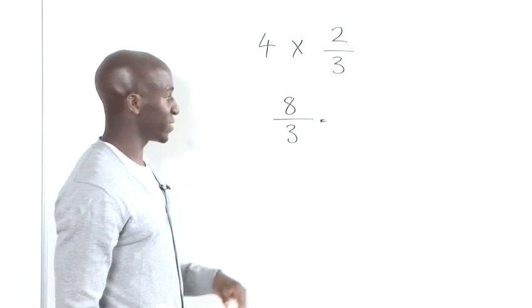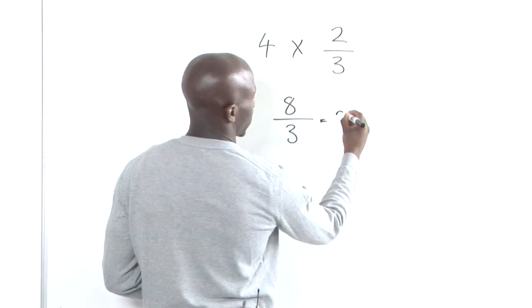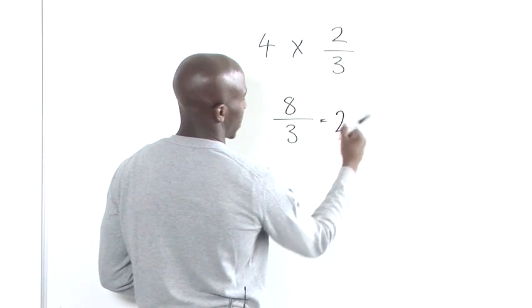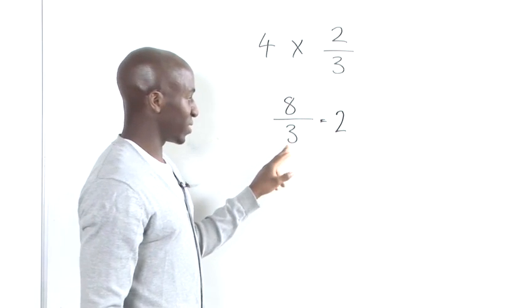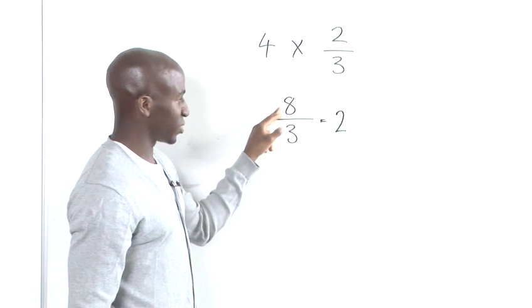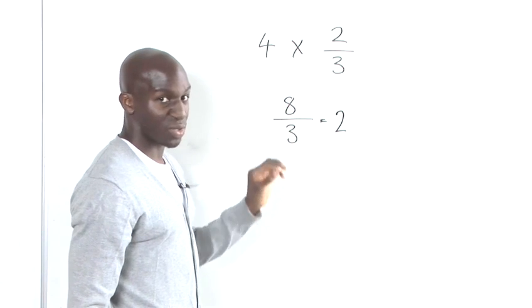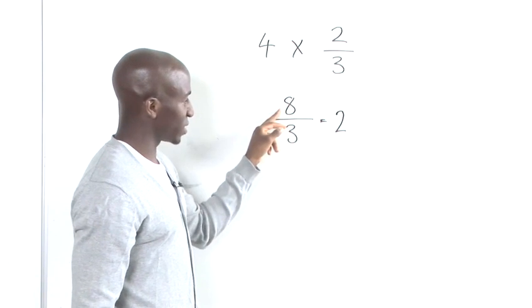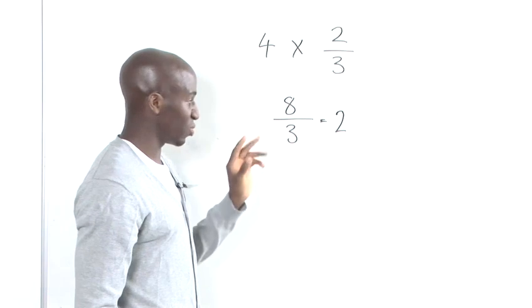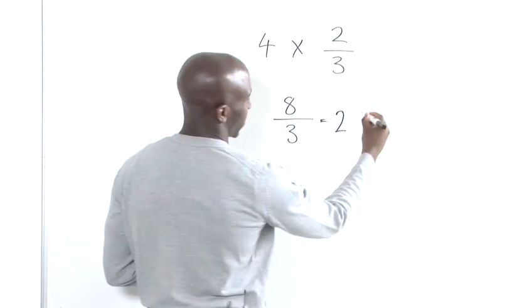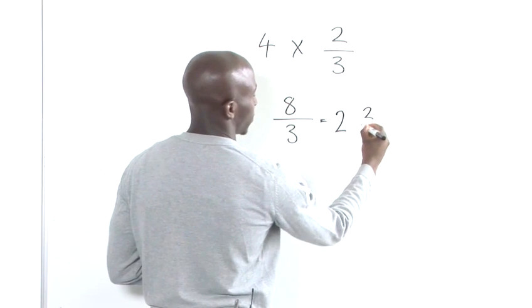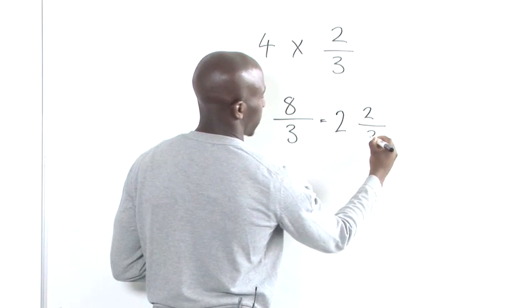So we've got twice and the remainder from 3 entering into 8 will leave 2. Because 3 goes into 8 twice with the remainder of 2. Remember it goes up to 6. So we've still got that remainder of 2. So we've got 2 divided by 3.